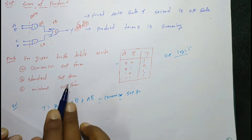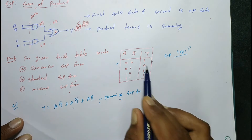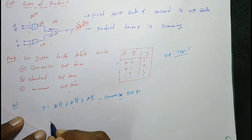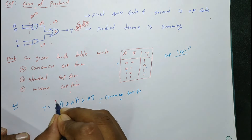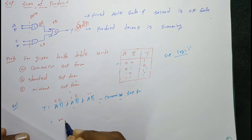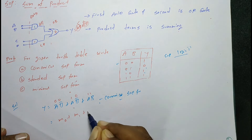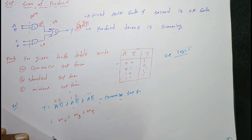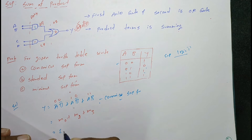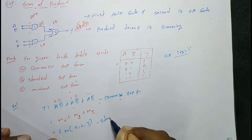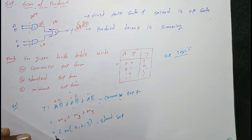Next, the standard SOP form — you represent this in sum of min terms. The binary values are 0 0, 0 1, 1 1, giving m0 plus m2 plus m3. That is, sum of min terms of 0, 2, 3. This is the standard SOP form.